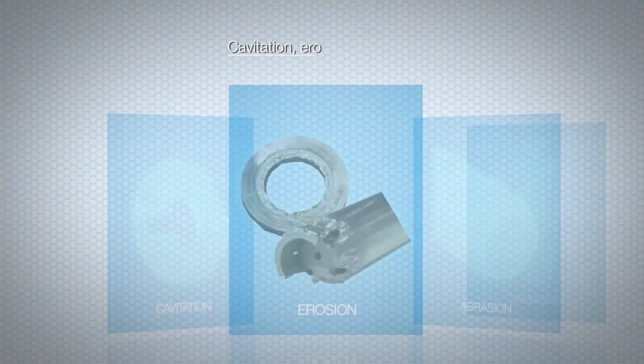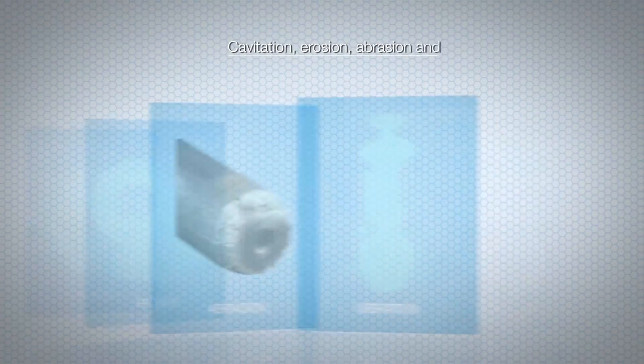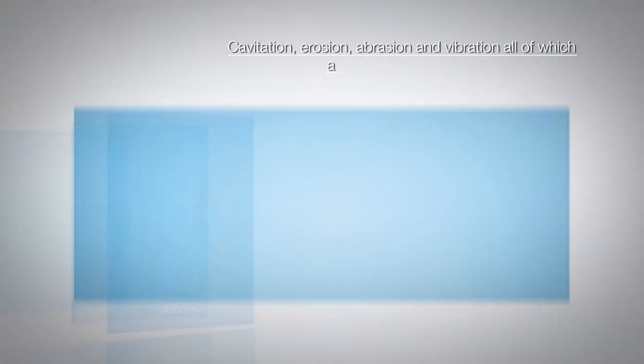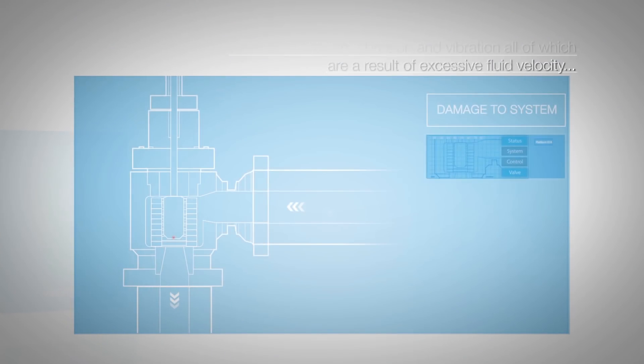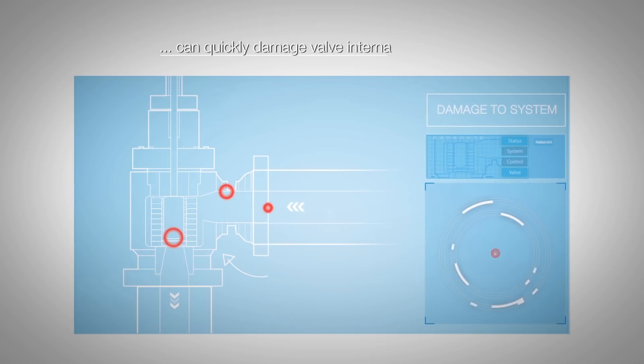Cavitation, erosion, abrasion and vibration, all of which are a result of excessive fluid velocity, can quickly damage valve internal elements and subsequently disrupt the designed operation of the system.